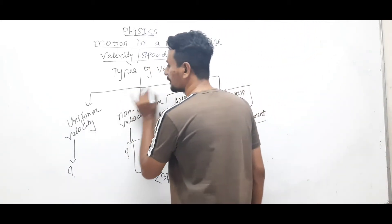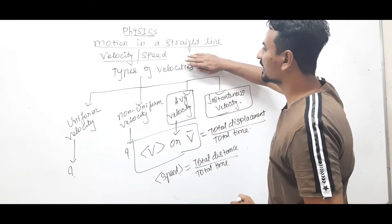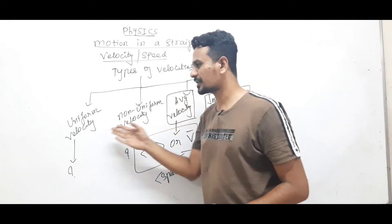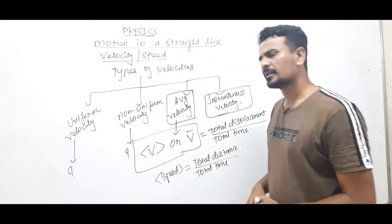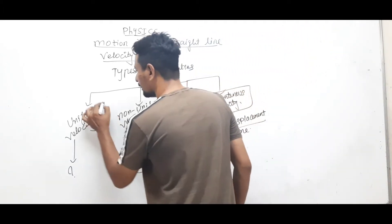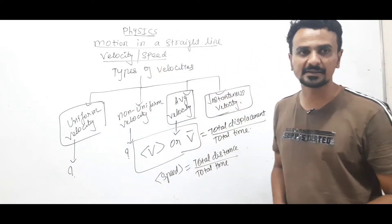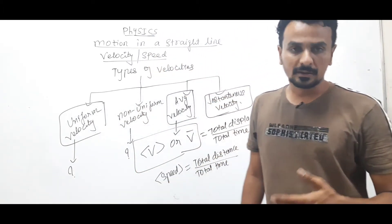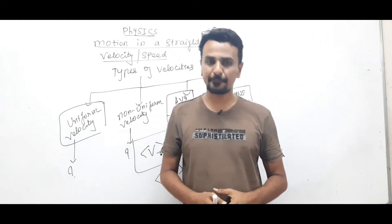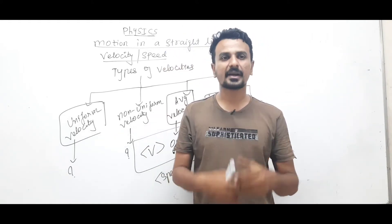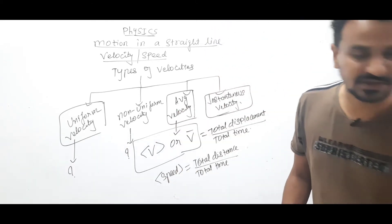So these are the four types of velocities: uniform velocity, non-uniform velocity, average velocity, and instantaneous velocity. Now we will derive the general formula to calculate average velocity or average speed, and then discuss special cases. Suppose a car is moving on a straight road and it travels distance d1 with velocity v1 in time t1, then another distance d2 with a different velocity and different time, and so on.